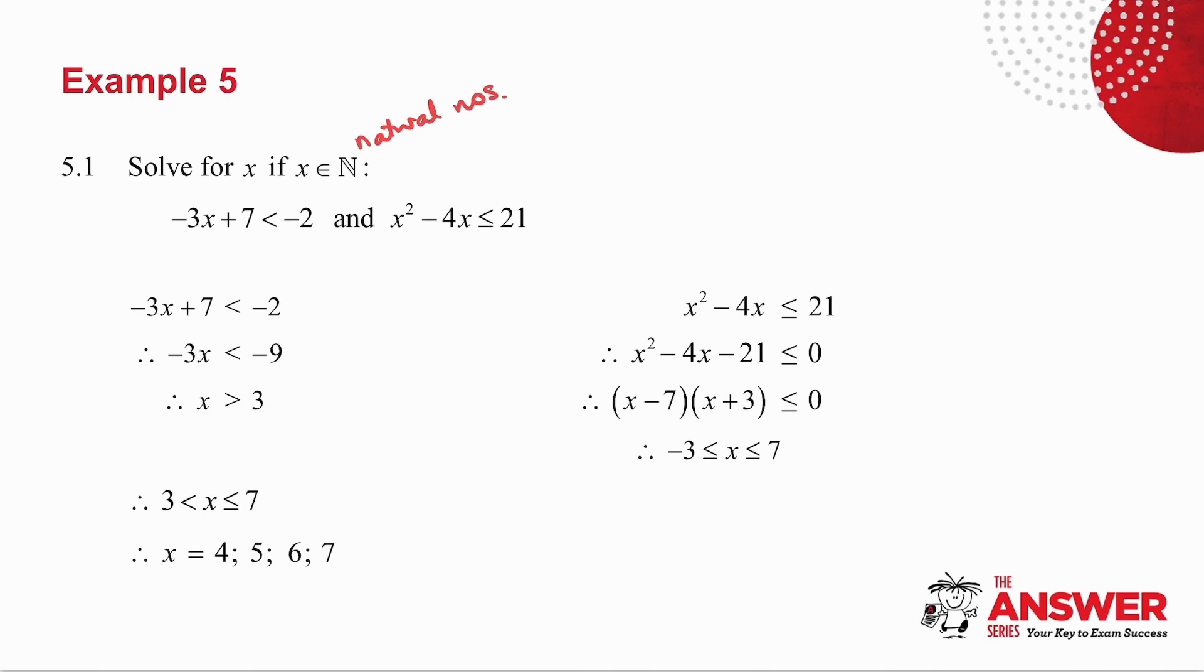I then take the quadratic inequality. Set it up. Factorize. You have a quadratic with a positive X squared. Your zeros are minus 3 and 7. You want where it is less than or equal to zero, which means you want that part there. So when X is greater than or equal to minus 3 less than or equal to 7.